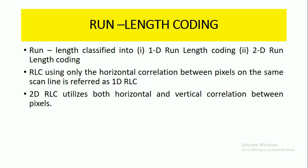There are two types of run length coding: one is 1D run length coding and the second is 2D run length coding. In 1D run length coding, only the horizontal correlation between the pixels is considered. In 2D run length coding, it utilizes both horizontal and vertical correlation between the pixels.